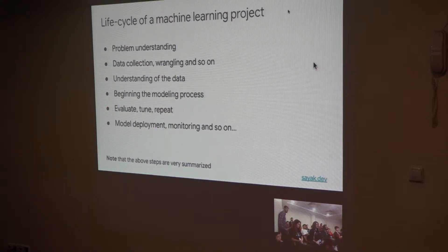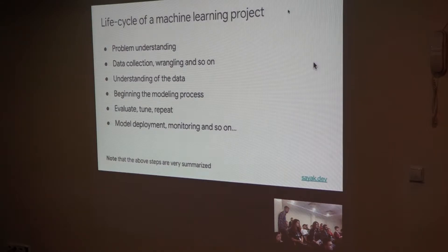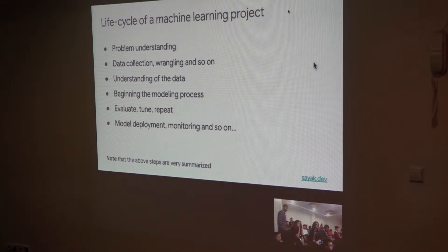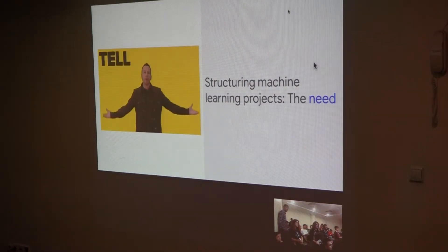Then you begin the favorite part of the entire process — the Machine Learning modeling process. You typically evaluate your model, tune hyperparameters, and repeat steps to converge to a workable model. Then you deploy the model and monitor the entire process, going back to retraining and evaluating. These steps are highly summarized and may not always be sequential, but they give a nice overview of an end-to-end Machine Learning project lifecycle.